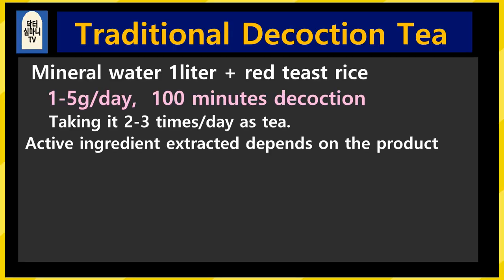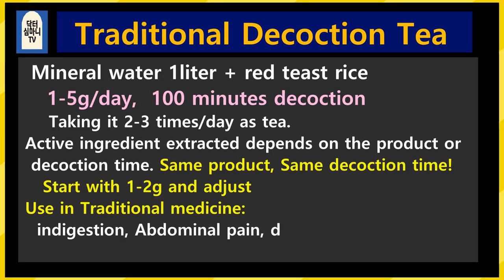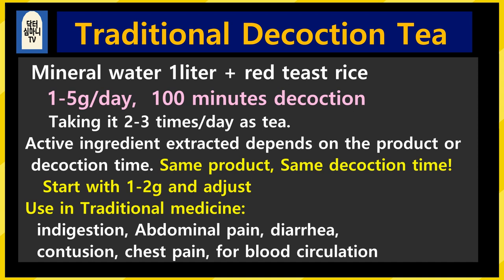The recommended daily intake of monacolin K is 4 to 8mg, which corresponds to about 20 to 30 grams of red yeast rice. You can make rice with white rice in a ratio of about 10 to 1. Start with as little as possible. Wash the white rice but do not wash the red yeast rice — just add it to the washed white rice before cooking, because washing may result in loss of active components. For traditional decoction tea, add about 1 to 5 grams of red yeast rice per day to 1 liter of water. Start with 1 to 2 grams and decoct for about 100 minutes. Drink 2 to 3 times as tea before or after meals. Always purchase from the same company and keep the decoction time constant.